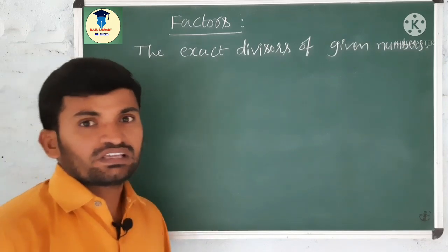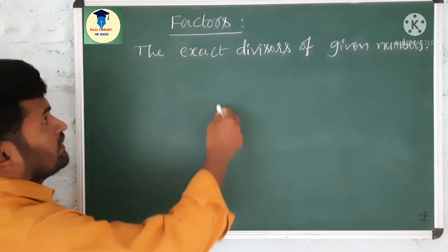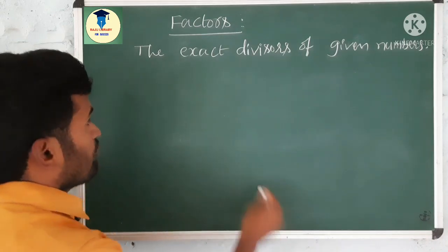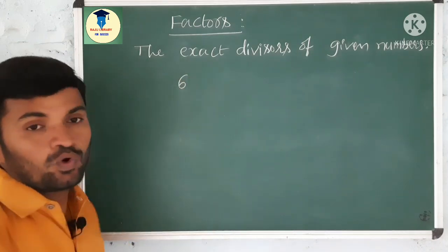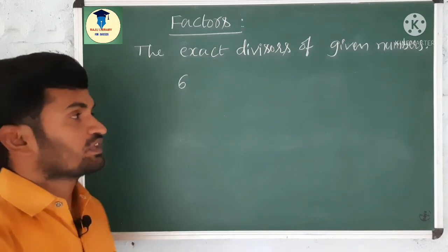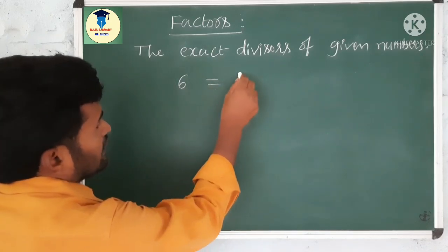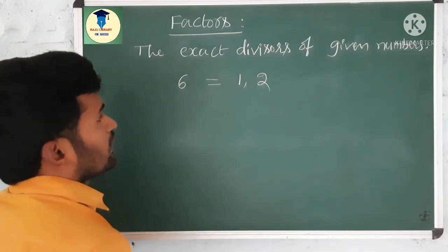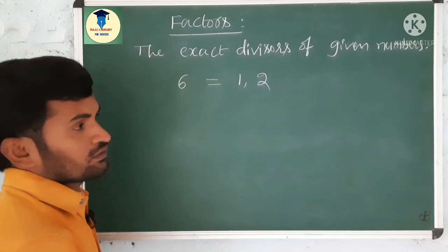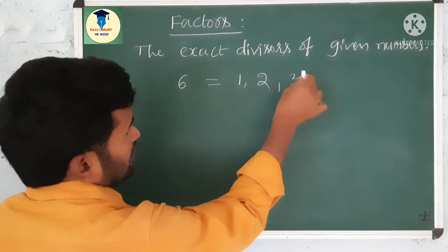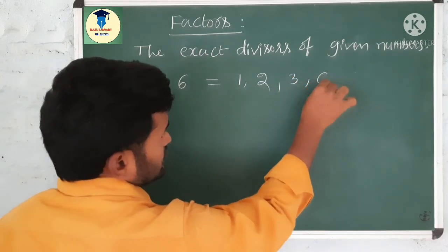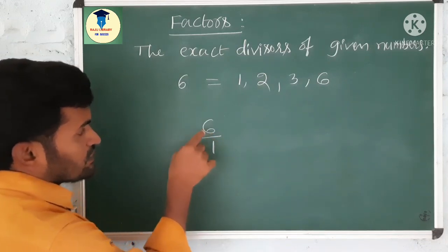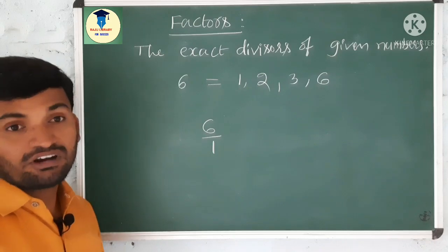So let us see some examples. Factors means the exact divisors of given numbers. If you take number 6, what are the factors of 6? Here we can say: 1 is a factor of every number. 2 is a factor of 6. 3 is also a factor of 6. 6 itself is a factor. 6 is divisible by 1: 1×6 is 6.